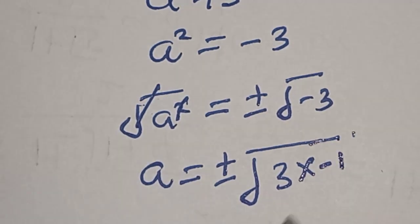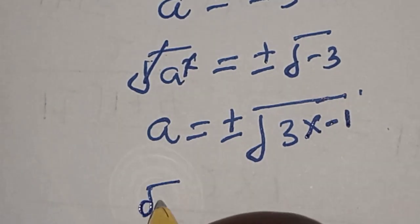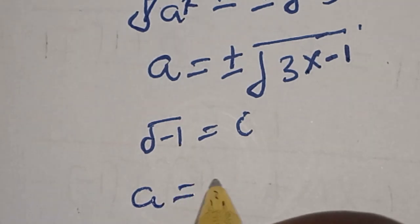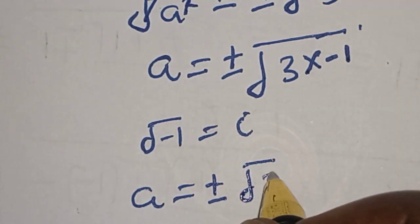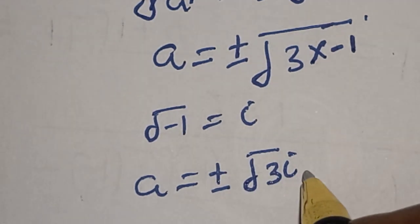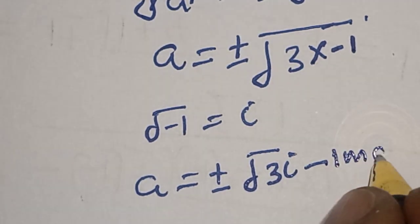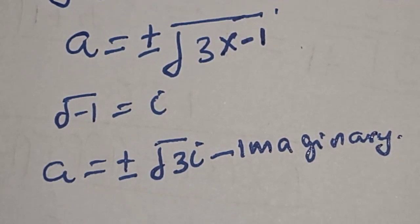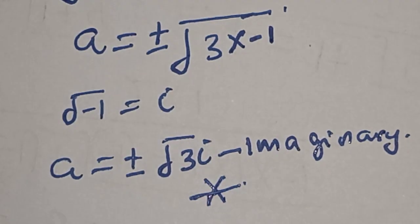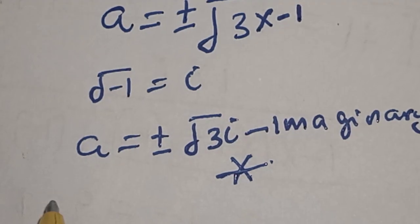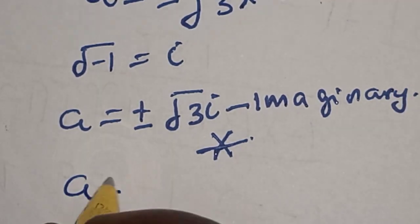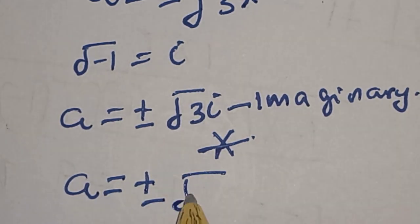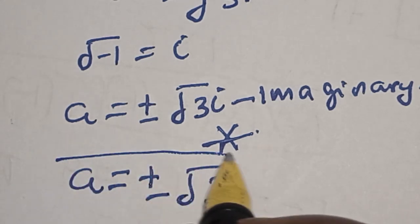This is imaginary and it is rejected. So the only solution we have is A is equal to plus or minus the square root of 3. That is our final answer.